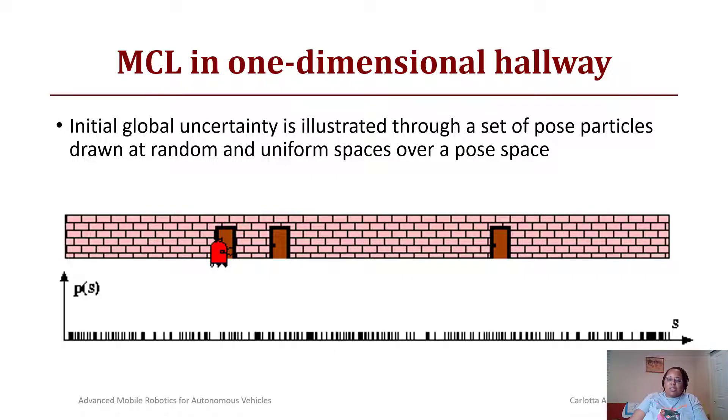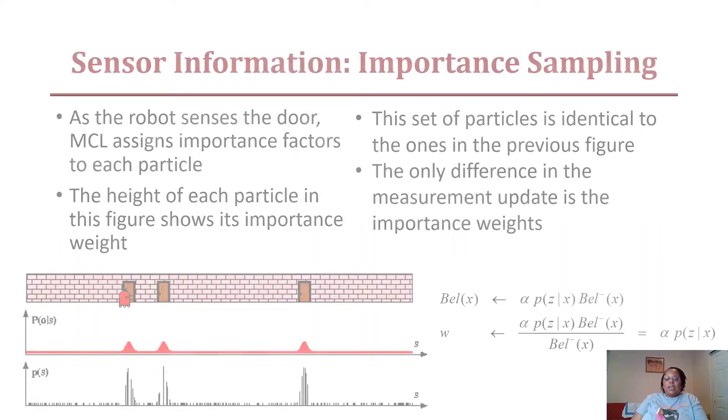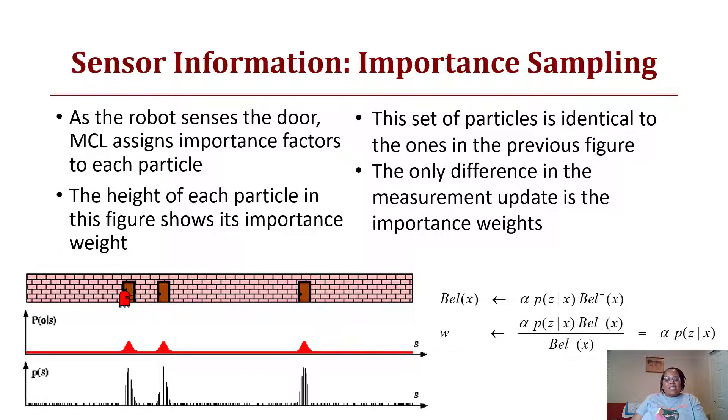In the next step, the robot senses the wall. The probability of a certain observation given a state is that the robot has sensed a door. The height of each particle in this figure now shows its importance weight, where we see that the sensor data has found there are three locations where there are doors. The set of particles is identical to the previous figure; the only difference is the measurement update.